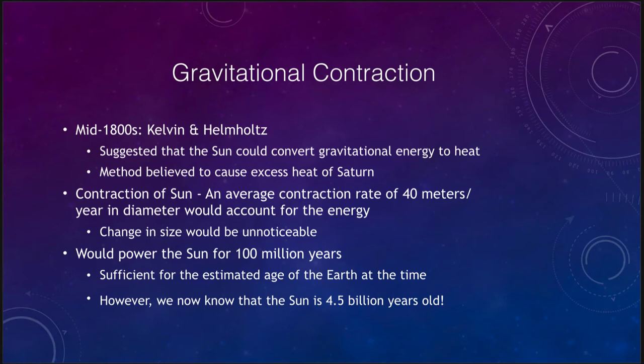One idea was gravitational contraction, which was looked at in the mid-1800s by two scientists Kelvin and Helmholtz. They suggested that the Sun could convert gravitational energy into heat. As something contracts down and gets smaller, it has potential energy. As we bring material in closer to the center, it contracts and converts potential energy into kinetic energy, and then through friction that would convert energy into heat.